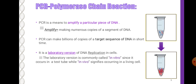PCR is a means to amplify a particular piece of DNA, making numerous copies of a segment of DNA. PCR can make billions of copies of a target sequence of DNA in a short time. It is a laboratory version of DNA replication in cells, commonly called in vitro since it occurs in a test tube, while in vivo signifies occurring in a living cell.